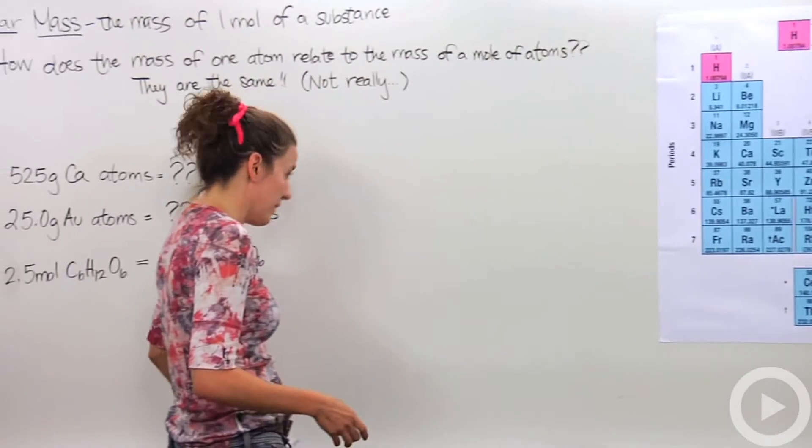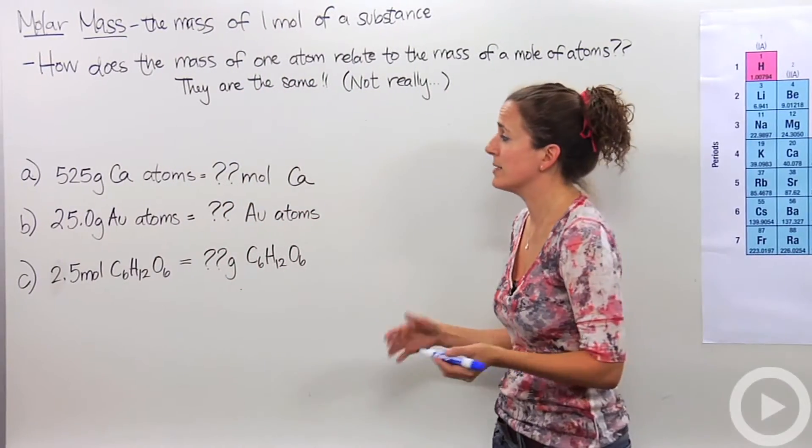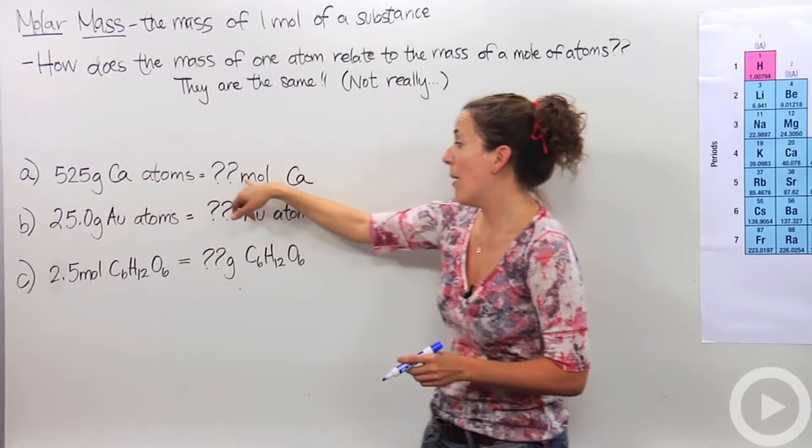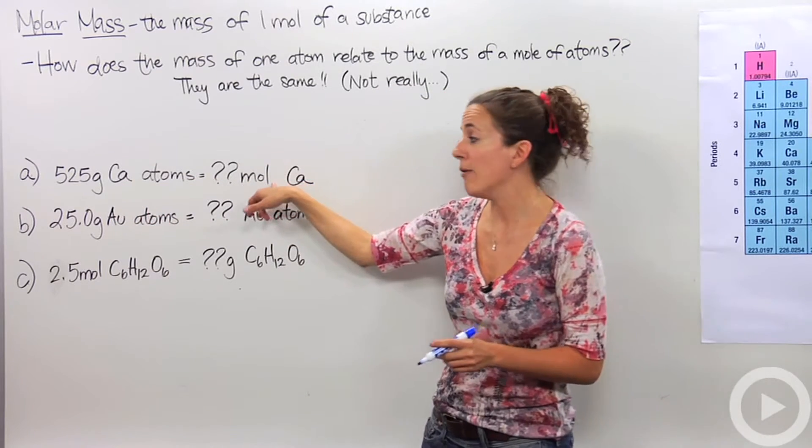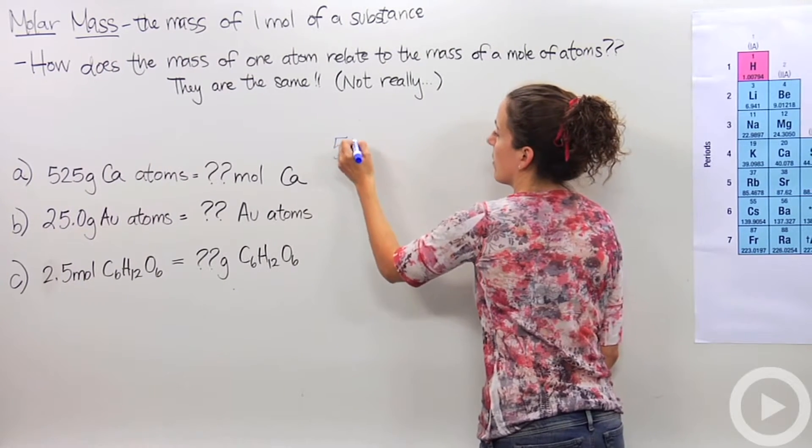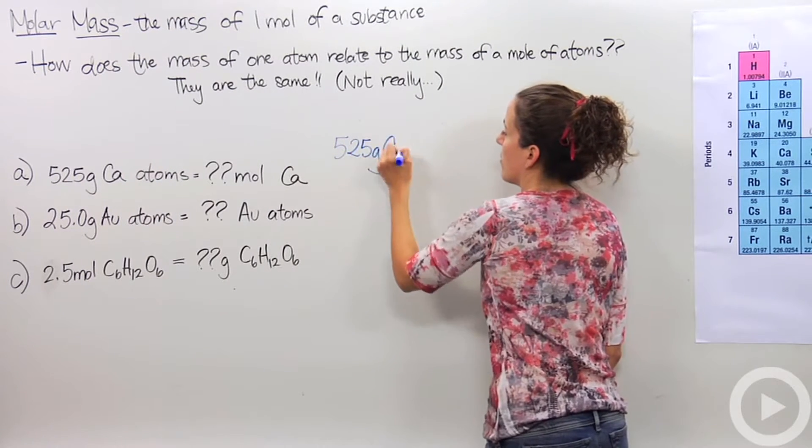So that number is actually extremely useful, and that is actually the mass of one mole of that particular substance, aka molar mass. Alright, so let's do some calculations with this. Let's see how we can apply this. So let's say we have 525 grams of calcium atoms. Well, how many moles of calcium atoms do I have? Well, let's start out with a given, which is 525 grams of calcium.